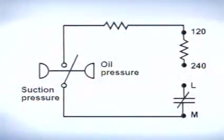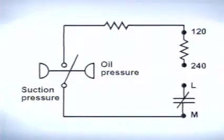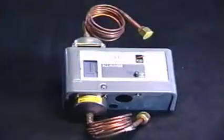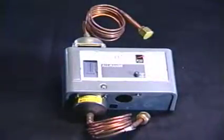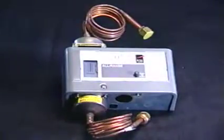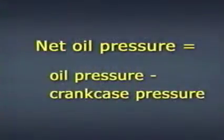Oil safety switches operate in a similar manner to the low pressure switch. If the oil pressure in a system falls below the acceptable level, the device will open, de-energizing the system. In order to read the oil pressure in the system accurately, the switch is connected to both the oil pressure port on the compressor and the compressor crankcase. The oil pressure of the system is the difference between the two pressures.